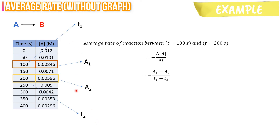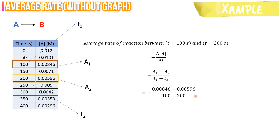We can plug these values into this formula and calculate. As a result, we get the average rate of reaction, which is 2.5 times 10 to the minus 5 molar per second.